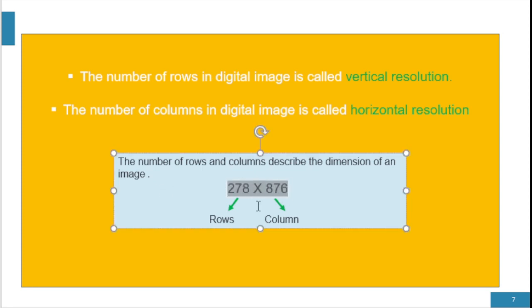We usually write the dimension of an image like this, in which the digits we write first are the number of rows and the digits we write second are known as columns.